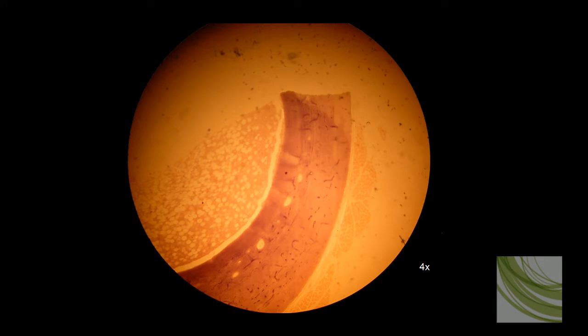Here is our first slide of spongy bone. We can see a marrow cavity here at 4X. We can see some adipocytes. This would be the spongy cancellous bone. We don't see the osteons that we would normally see in compact bone.